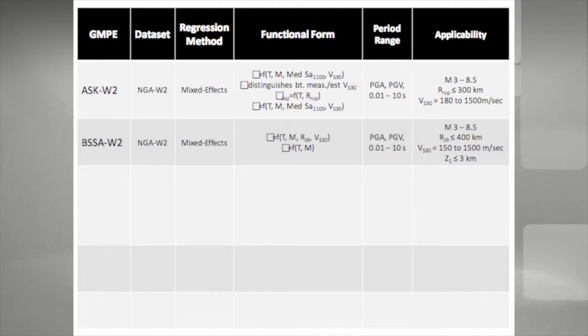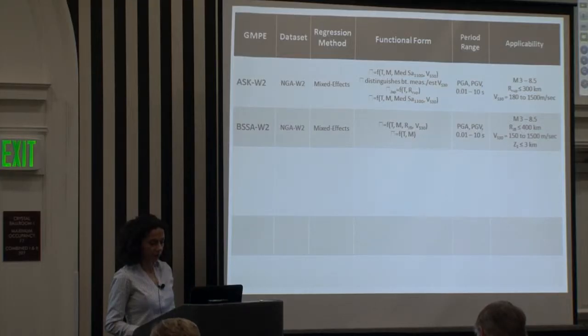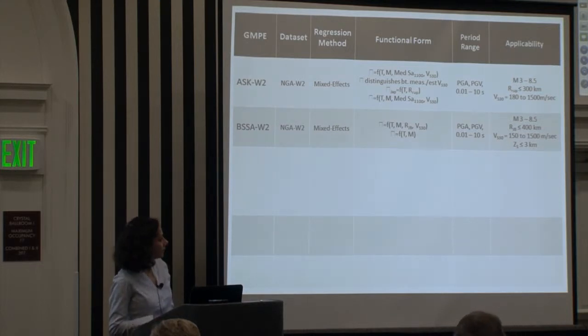Boore et al., they use the mixed effects algorithm to estimate their within event and between event standard deviations. Their tau is a function of magnitude and spectral period, and their phi is function of magnitude, distance, and VS 30.